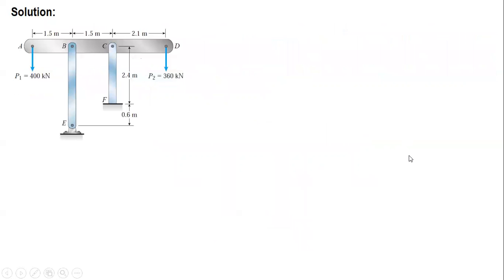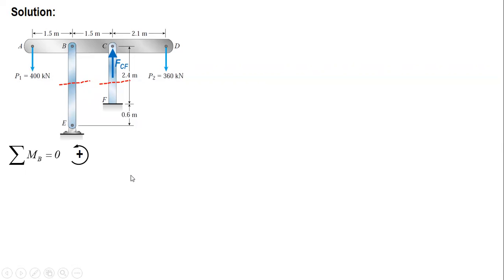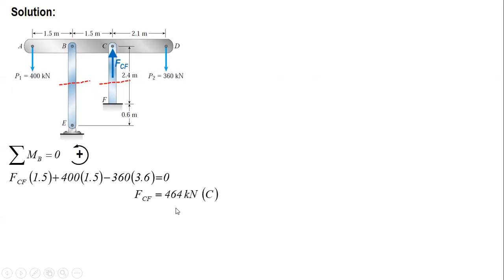Let's cut bars BE and CF. We can determine the force in CF by summing moments about B. FCF acts counterclockwise, so it is positive. The 400 kN force is counterclockwise, while the 360 kN force is clockwise. So: FCF × distance + 400 × distance − 360 × 3.6 = 0. Solving, FCF is 464 kN, compression.